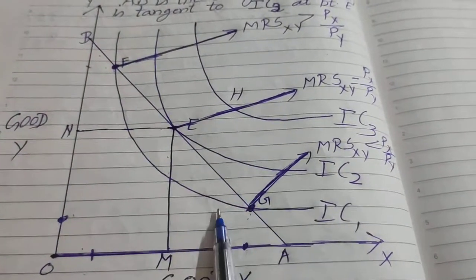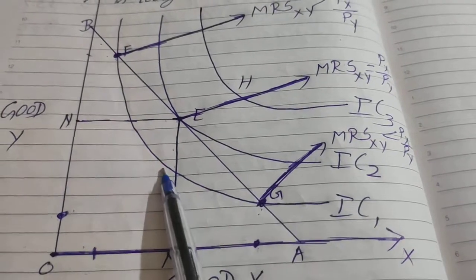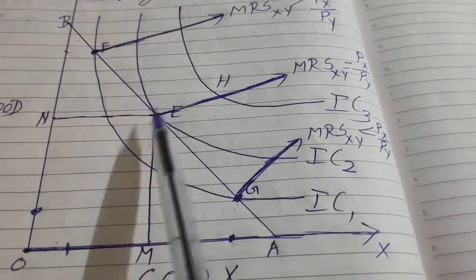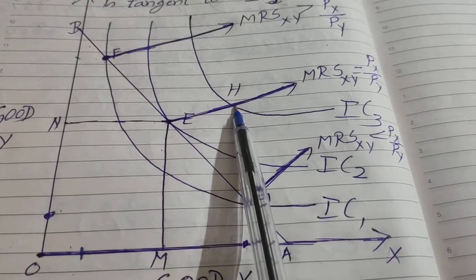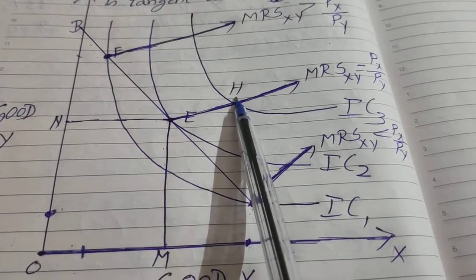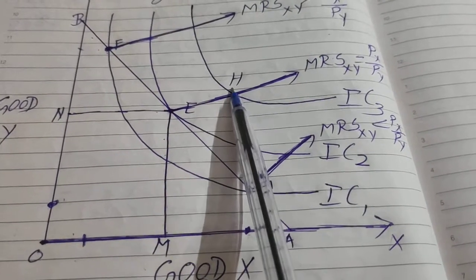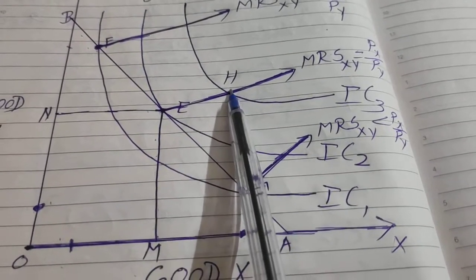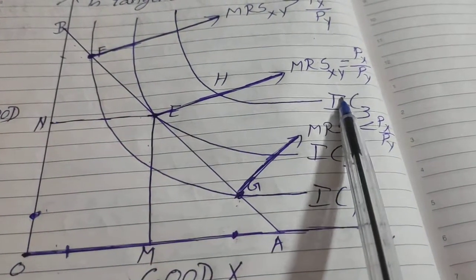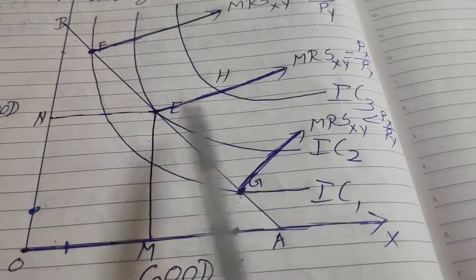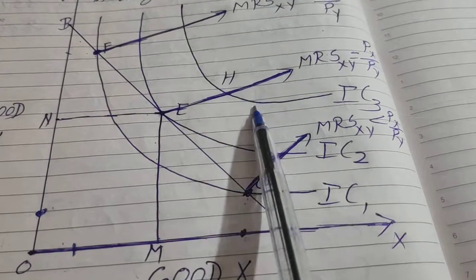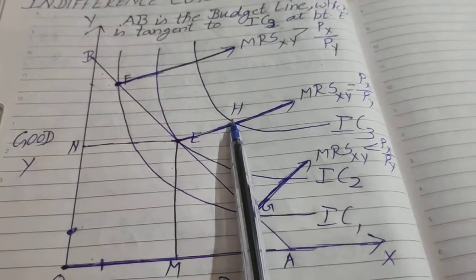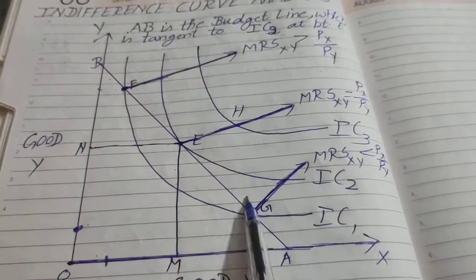This is the explanation with the help of diagram. IC3 curve jo hai, it is out of reach of the consumer kyunki yeh budget line se bahar ja rahi hai. Point H is also undesirable for the consumer — consumer can't reach this point kyunki consumer ka itna budget hi nahi hai. Agar uski income badh jaati hai tabhi wo H point pe pahunch sakta hai, otherwise IC3 is beyond the price line. Consumer kabhi bhi is point ko touch nahi kar sakta — it is an undesirable situation. This is how to attain consumer equilibrium through indifference curve analysis.